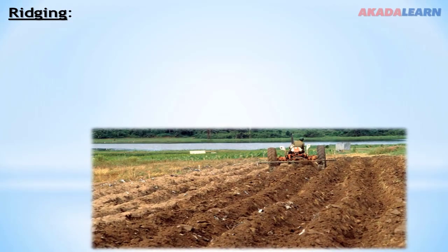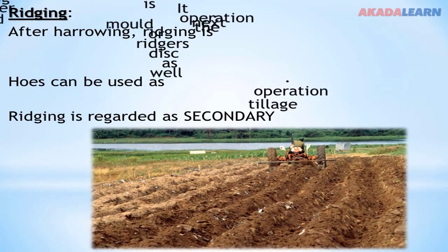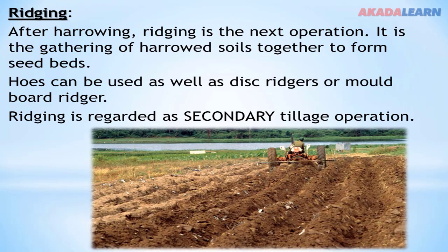Ridging. After harrowing, ridging is the next operation. It is the gathering of harrowed soil together to form seedbeds. Hoes can be used as well as disc ridgers or mouldboard ridgers. Ridging is regarded as a secondary tillage operation.